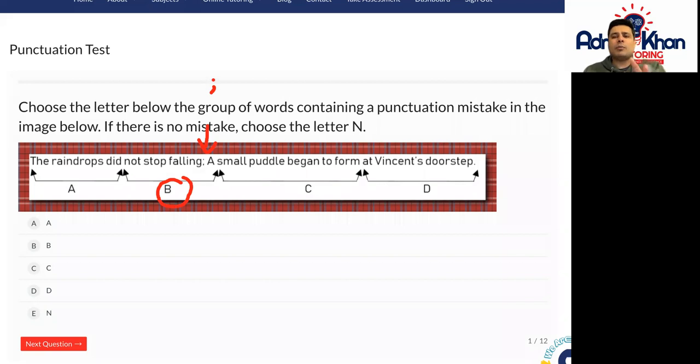A semicolon actually replaces a strong comma. If you feel there should be a comma to split the sentence up, then we use a semicolon.